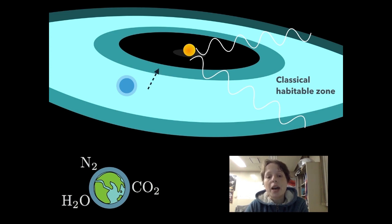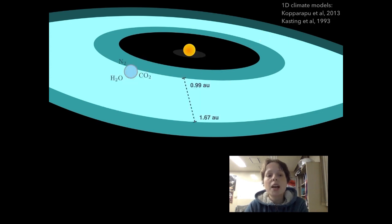At the inner edge of the habitable zone, it is too warm for surface water on the Earth and it evaporates. At the outer edge, carbon dioxide condenses into clouds and is no longer able to provide the thermal insulation of a greenhouse gas, so the planet freezes. Climate models predict that the habitable zone should stretch between 0.99 AU and 1.67 AU, where 1 AU is the average distance of the Earth from the Sun. Our planet therefore sits right on the inner edge.